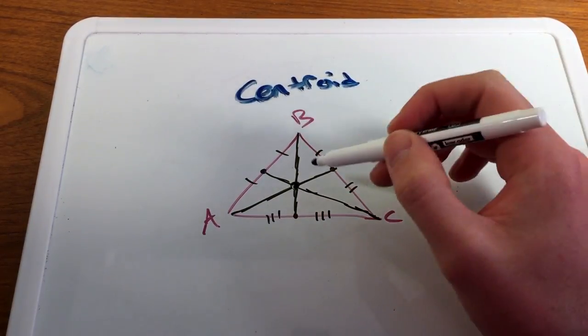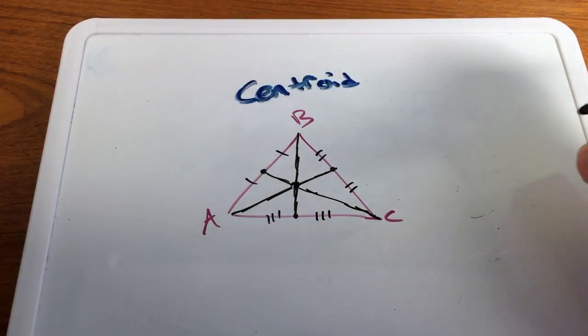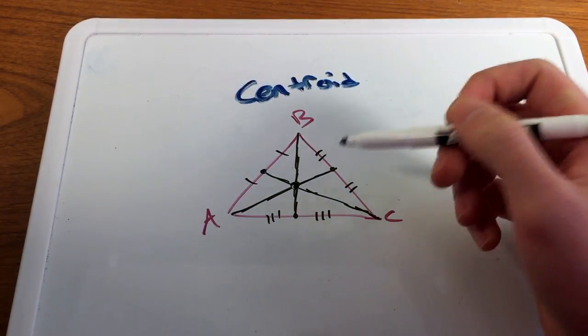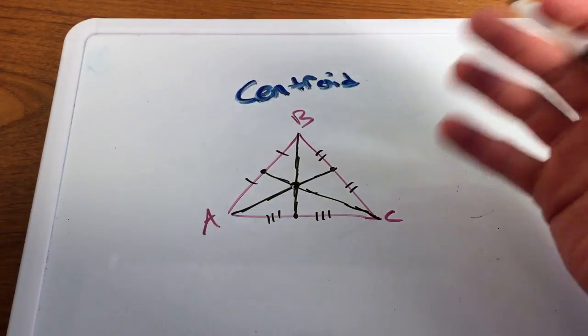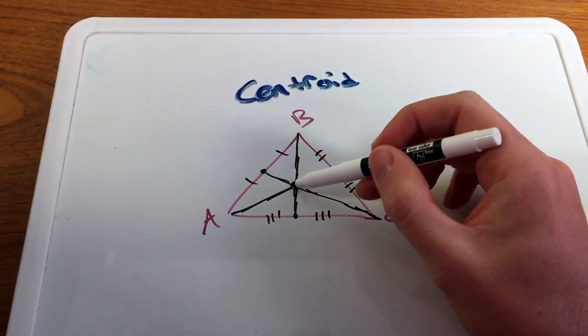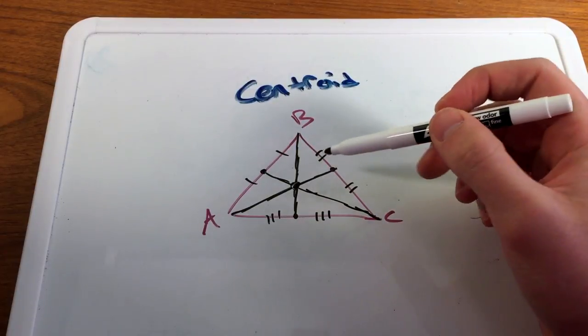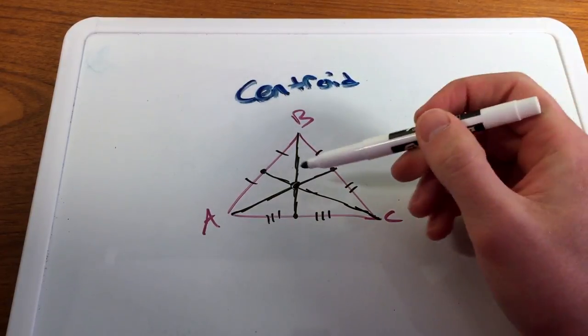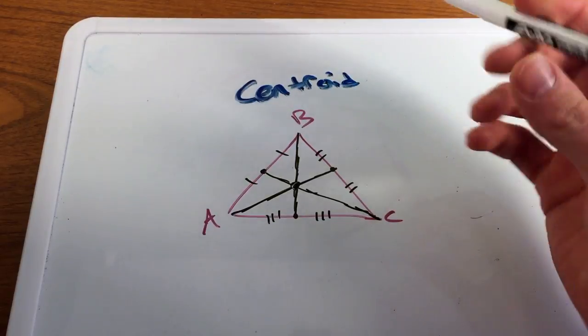And the centroid, what's interesting with the centroid is called the balance point of the triangle. So if I were to make a three-dimensional model of this triangle, I have a piece of wood that was evenly weighted across, when I would find the centroid of that triangle, it would be the perfect balance point. I can take my pencil or marker underneath it and balance it right at that one spot.